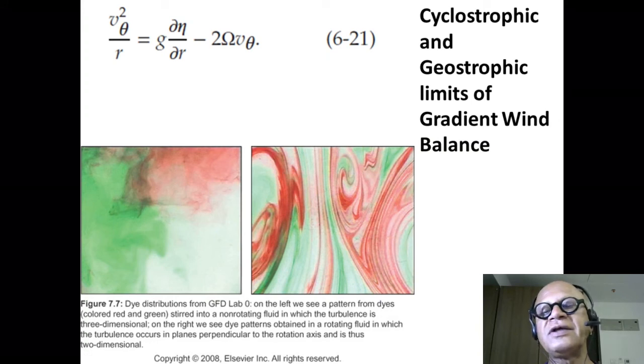So as you get closer to the center, you don't have geostrophic balance anymore. Pressure gradient is not balanced by the Coriolis, the rotational effect. You get the effect of the centrifugal as well or the acceleration. So you get inertial forces, pressure gradient force and the rotational force.